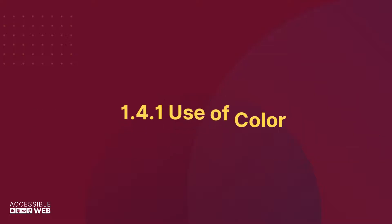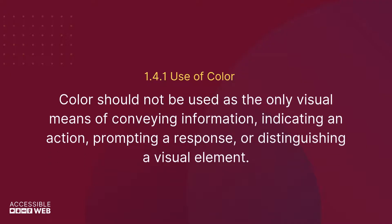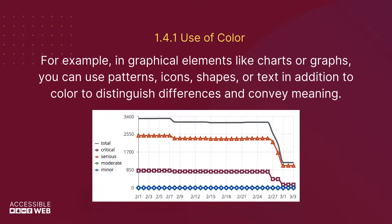WCAG 1.4.1 Use of Color: Color should not be used as the only visual means of conveying information, indicating an action, prompting a response, or distinguishing a visual element. For example, in graphical elements like charts or graphs, you can use patterns, icons, shapes, or text in addition to color to distinguish differences and convey meaning.